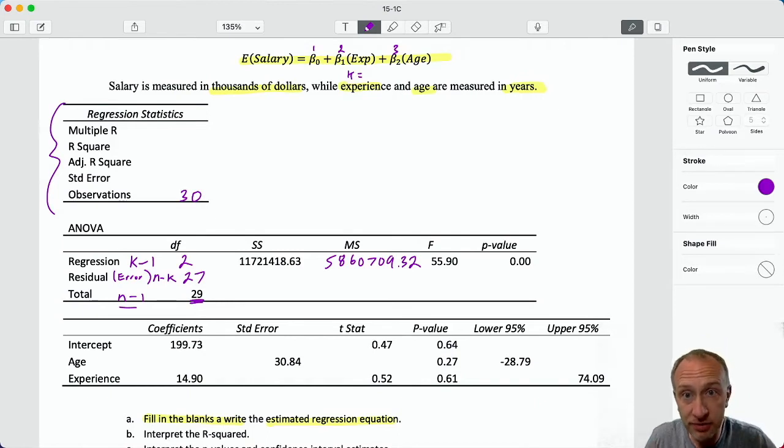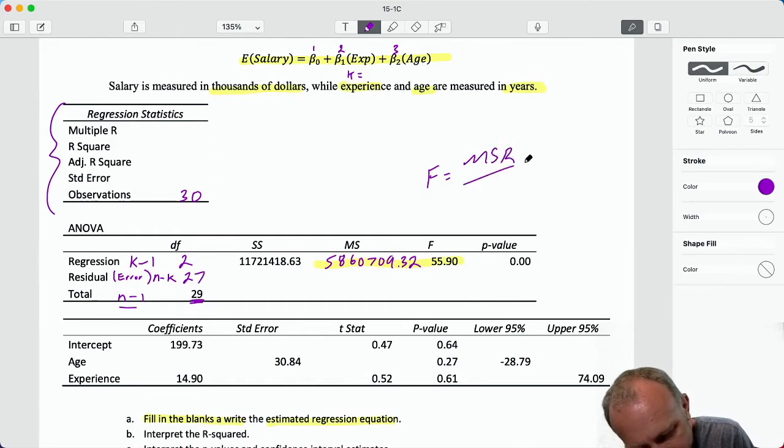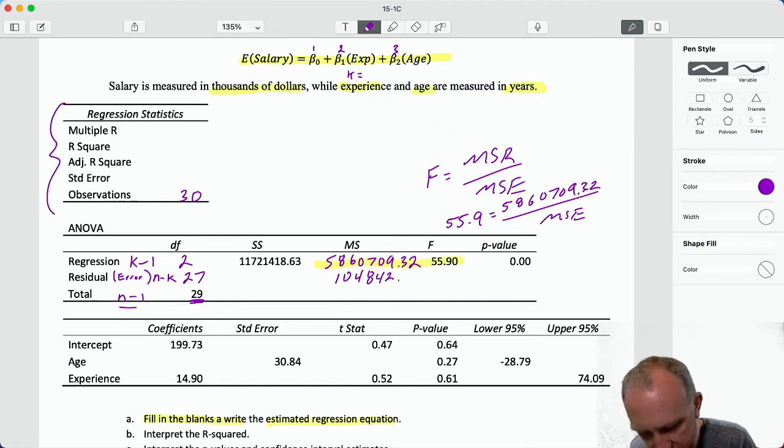Now I can go back to the second row and use MSR combined with the F statistic to solve for MSE. Because I know that F is just the ratio of MSR over MSE. So 55.9 is equal to MSR divided by MSE. I can solve for MSE: 5,860,709.32 divided by 55.9, that gives me MSE is 104,842.74.